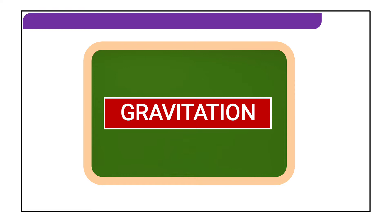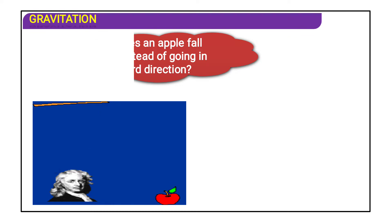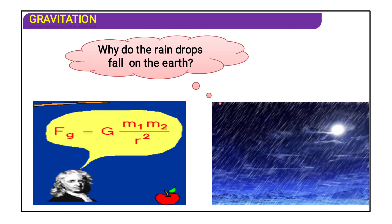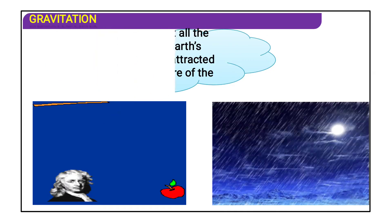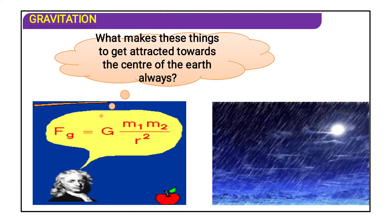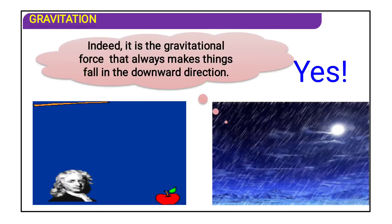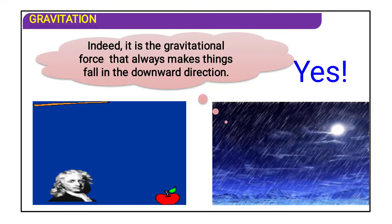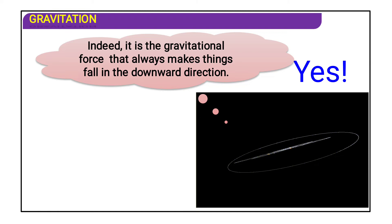Today we are going to discuss about gravitation. Introduction to gravitation: why does an apple fall down instead of going in any other direction? Why do raindrops fall on earth? We observe that all things in the earth's atmosphere move in downward directions. What makes these things get attracted towards the center of the earth always?